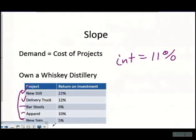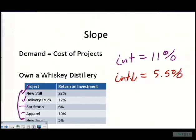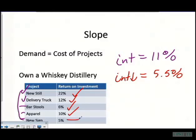What happens when the interest rate falls — say down to 5.5%? I'm still going to build the new still and buy the delivery truck. Now barstools become worthwhile too, since a 6% return exceeds the 5.5% borrowing cost. Apparel, with a 10% return, is also well above 5.5%. But the new sign still falls below the interest rate, so I skip it. When interest rates are falling, I end up investing more — that's why the demand curve is downward sloping.